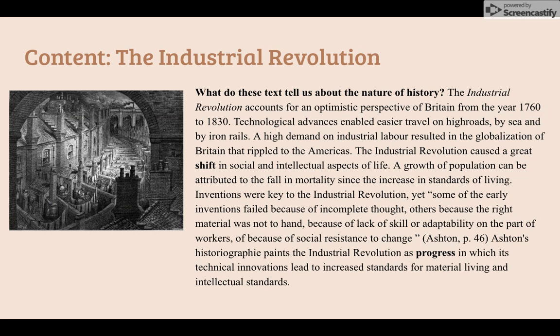What does this text tell us about the nature of history? The Industrial Revolution accounts for an optimistic perspective of Britain from the year 1760 to 1830. Technological advances enabled easier travel on high roads, by sea, and by iron rails. A high demand on industrial labor resulted in the globalization of Britain that rippled to the Americas. The Industrial Revolution caused a great shift in social and intellectual aspects of life. A growth of population can be attributed to the fall of mortality, since it increased standards of living. Inventions were key to the Industrial Revolution, yet some early inventions failed because of incomplete thought, others because the right material was not at hand, lack of skill, or social resistance to change. Ashton's historiography paints the Industrial Revolution as progress, in which its technological innovations led to increased standards for material living and intellectual advancement.